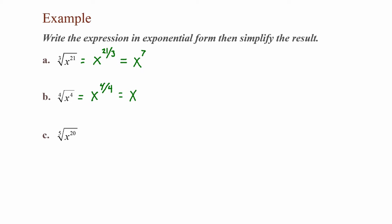Part C, I have the fifth root of x to the twentieth power. Rewriting this in exponential form, I have x to the twentieth power divided by my root, which is five. Reducing, twenty divided by five is four, so my answer is x to the fourth power.